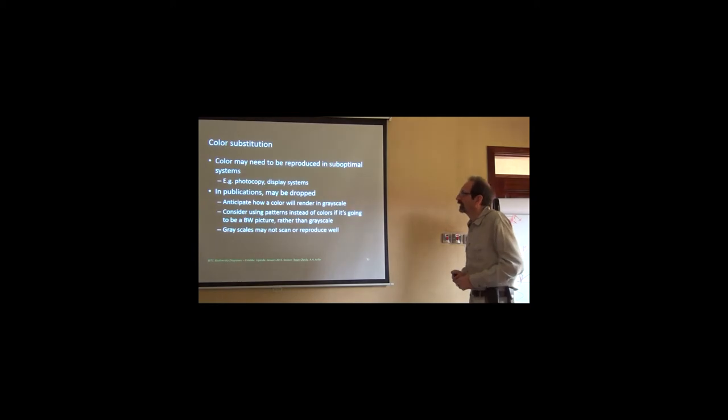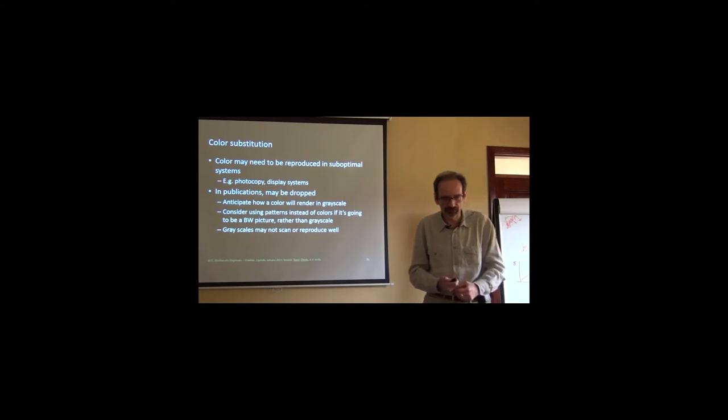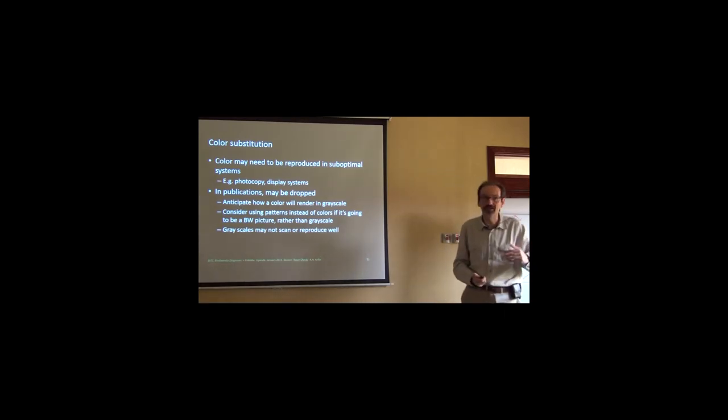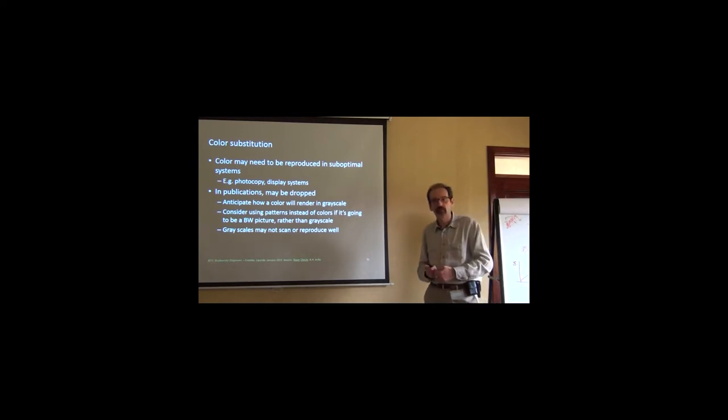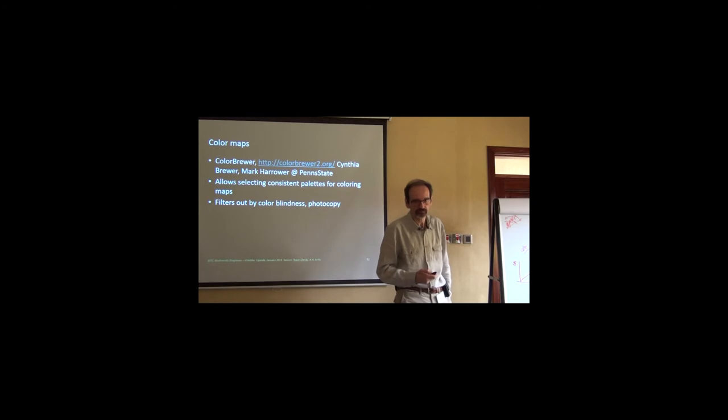Final suggestions. You can substitute colors often, but not always. Colors might need to be reproduced in some optical systems such as photocopies, although they are disappearing quickly. Many publishers won't use colors. They will require you to use black and white. So try to think whether something can be done well done in black and white. And anticipate, just in case, how a color will render in gray space. Make a copy of your plots, of your color plot, desaturate it to the minimum so it's gray, and see how it looks. Does it look right? Consider using patterns if necessary, although they are also becoming out of the game increasingly. And remember that gray scales might be difficult to scan and reproduce.